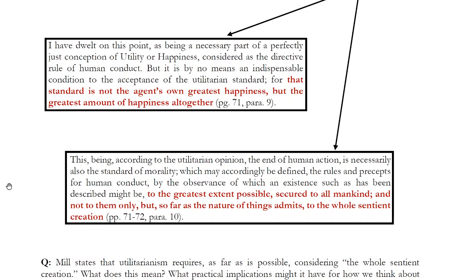And this makes sense. If you're a hedonist, if you think that what makes a life go well is the presence of pleasure and absence of pain, then human beings aren't the only animals that can feel those sensations — many other animals can as well. So what we see with the principle of equality is this idea that we have to take into account the happiness of every single individual that can be influenced by our actions, whether we know them or don't, whether they live near us or far, or whether they're even the same species as us.